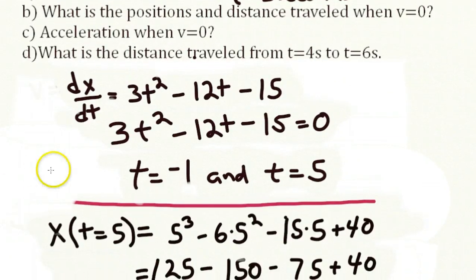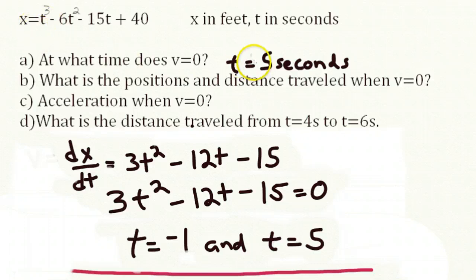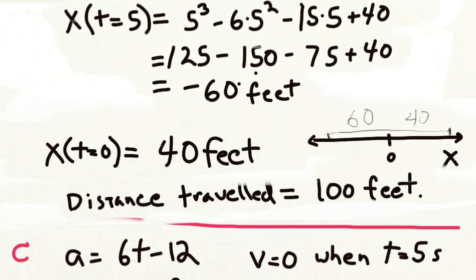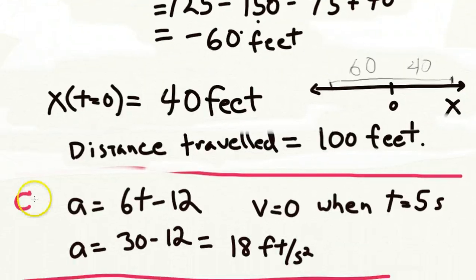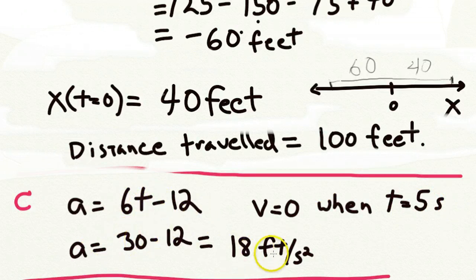The next question is: what is the acceleration when the velocity equals zero? We know v equals zero at t equals five seconds. The acceleration is the second derivative of position with respect to time, which gives 6t minus 12. Plugging in five seconds: six times five equals 30, minus 12 equals 18 feet per second squared.